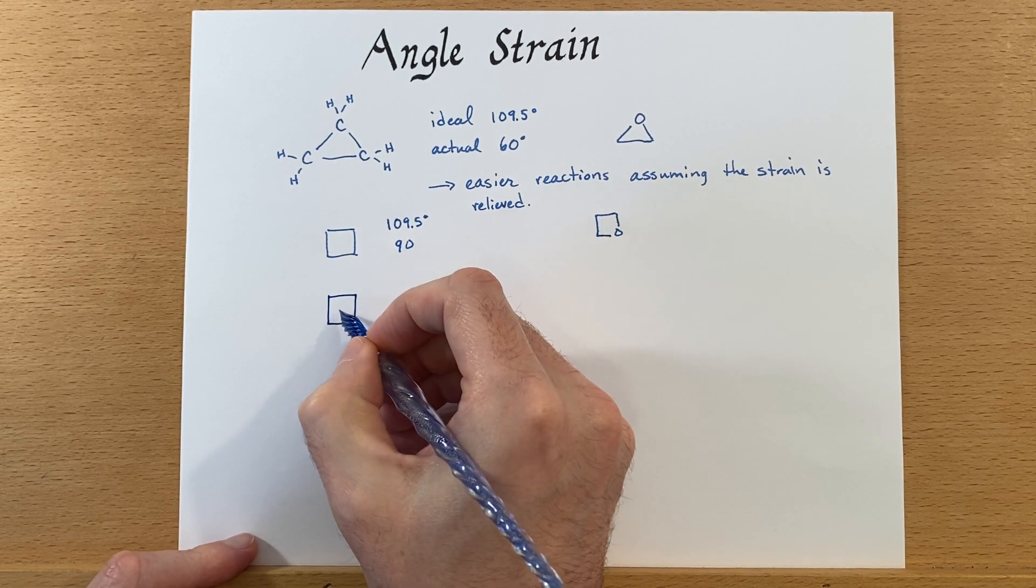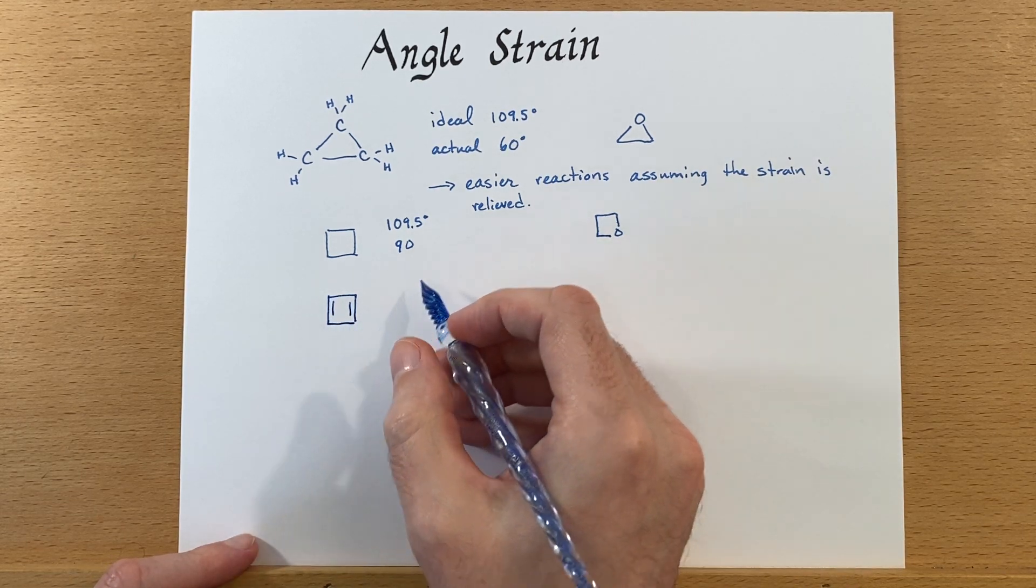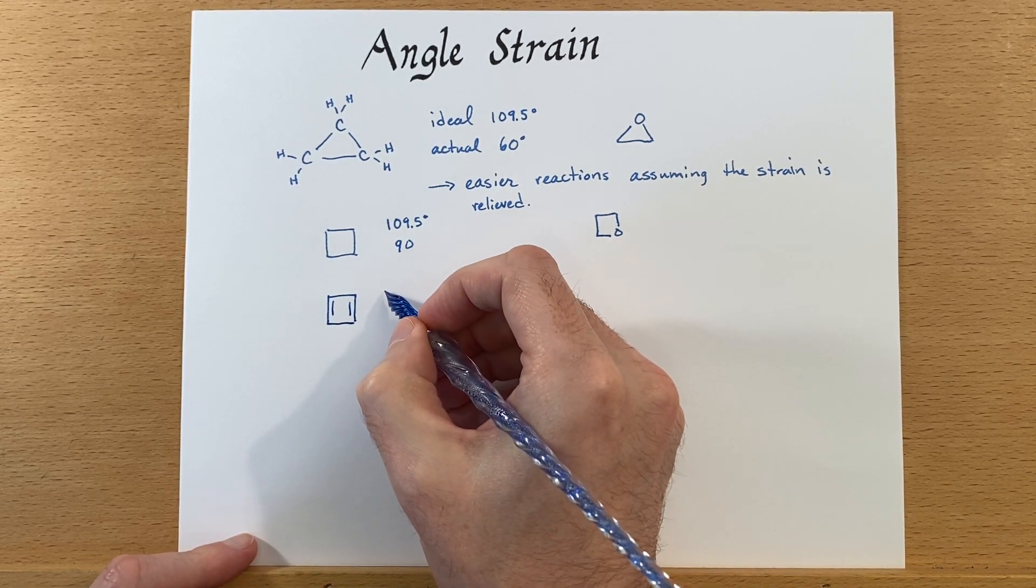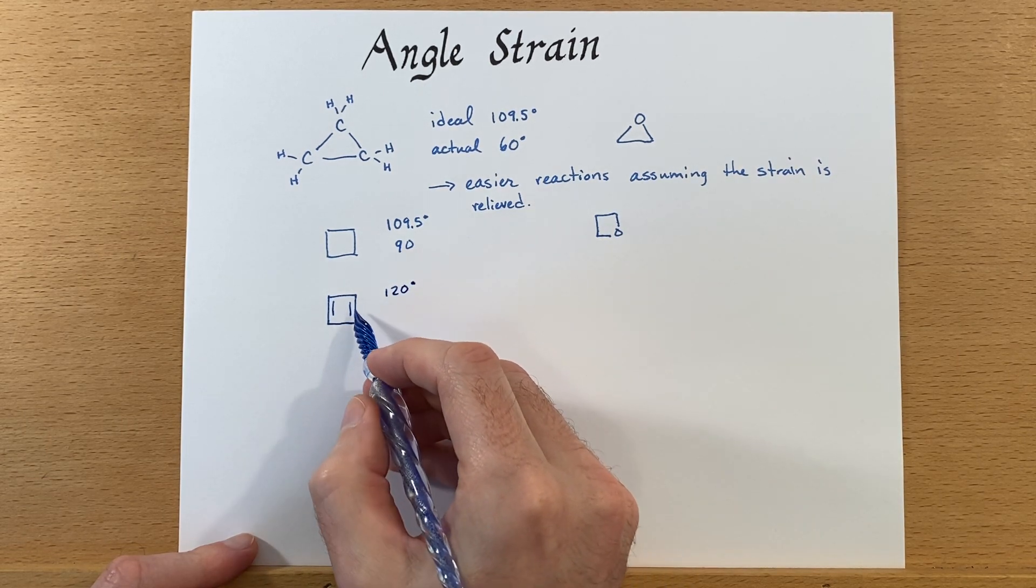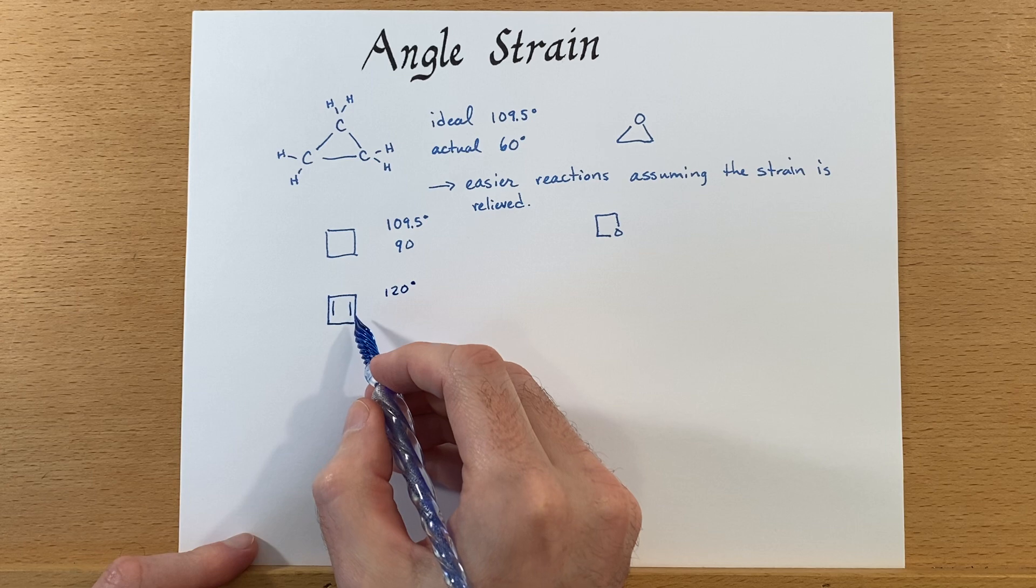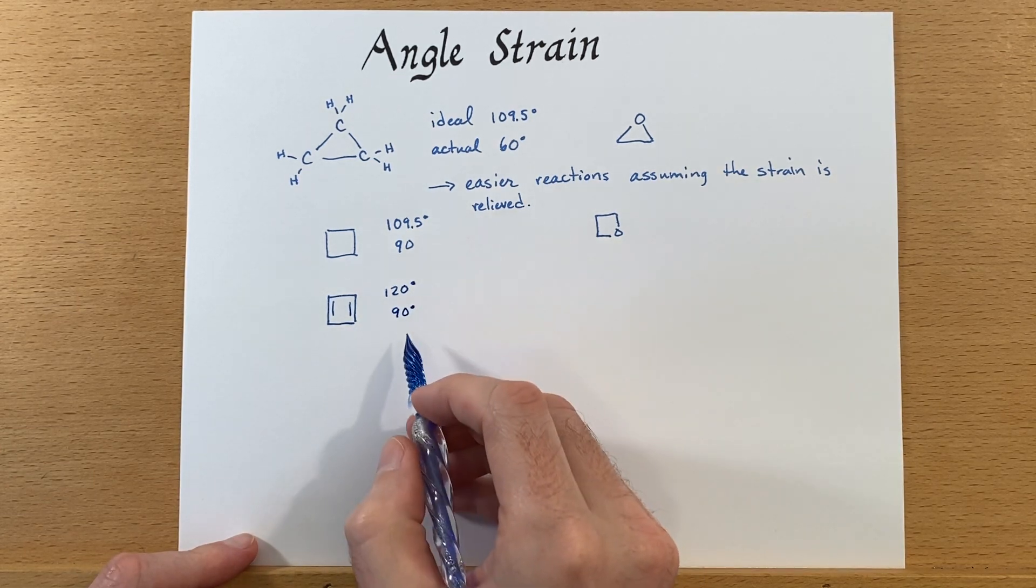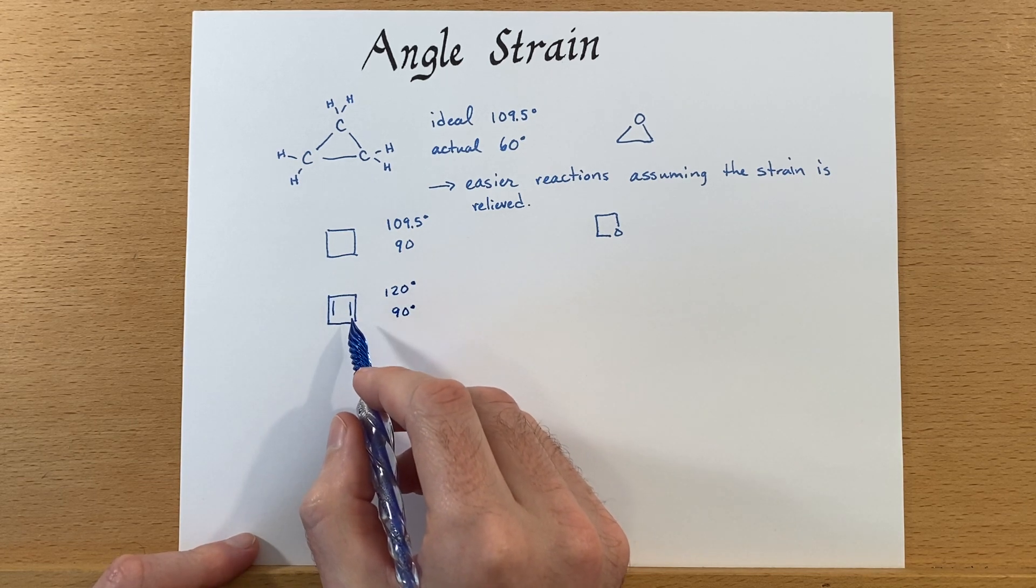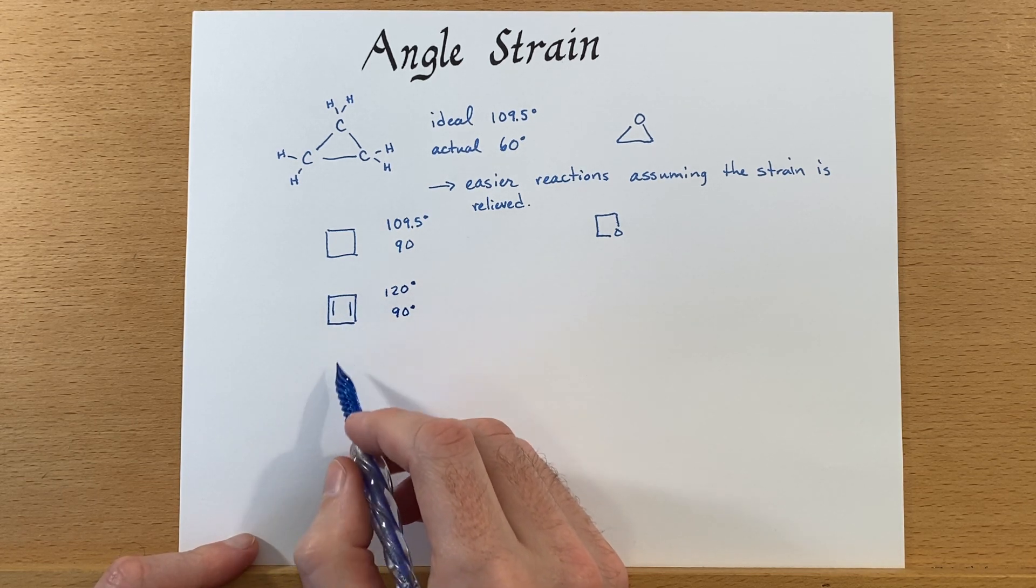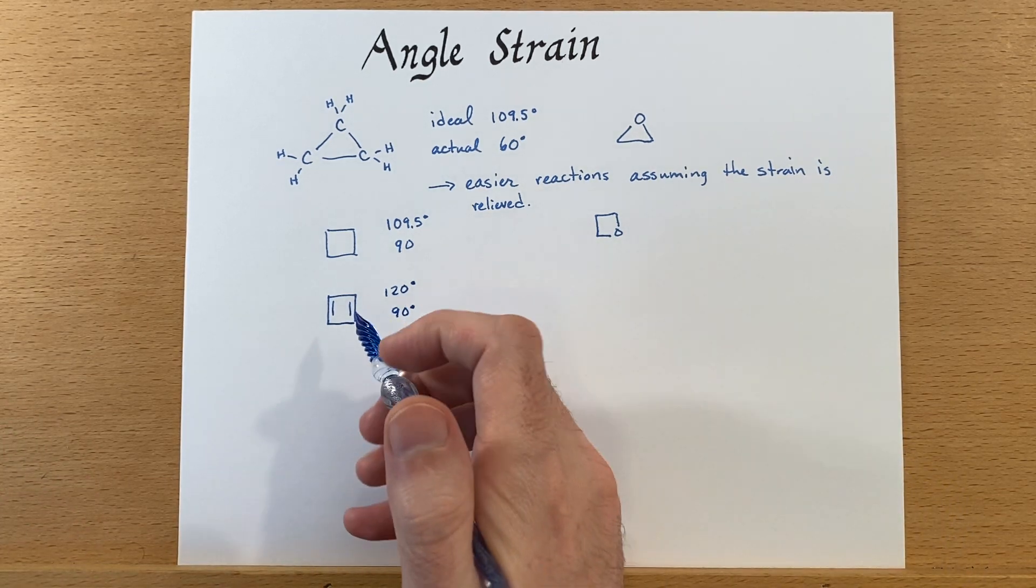Another molecule where there's a lot of angle strain is the cyclobutadiene, which ideally has a 120 degree angle because it's got a double bond here, but it's being forced into a 90 degree angle. That produces a significant amount of strain and these are very reactive. They'd like to make something else to relieve the strain.